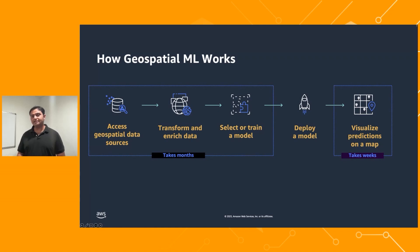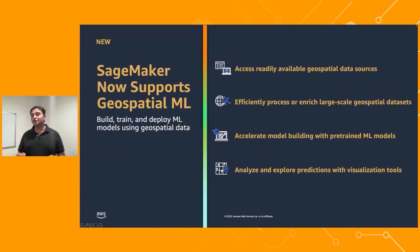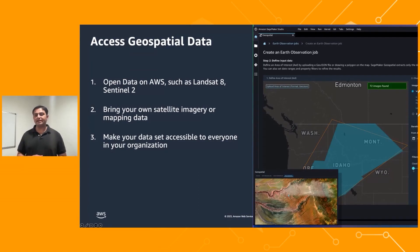To solve some of these challenges, at re:Invent we launched SageMaker geospatial capabilities. These new capabilities make it easy for data scientists and machine learning engineers to build, train, and deploy models using geospatial data. The first challenge was getting access to geospatial data and building connectors. Now Amazon SageMaker provides APIs that enable you to access data from open data sources like Landsat and Sentinel-2 with just one API call.